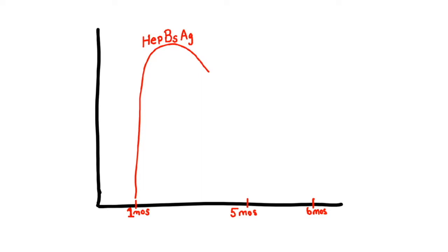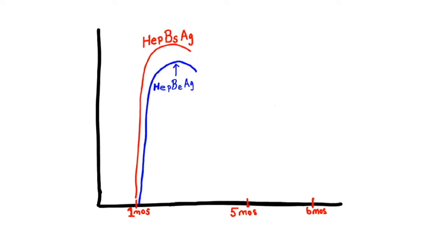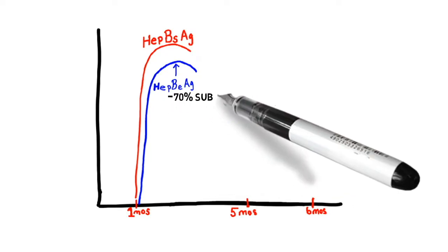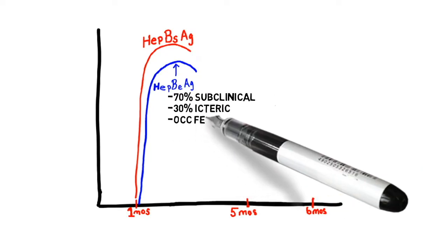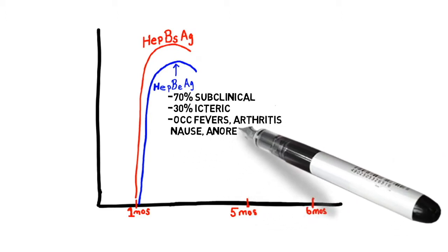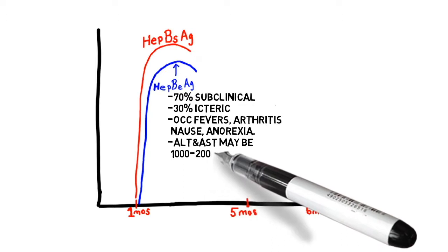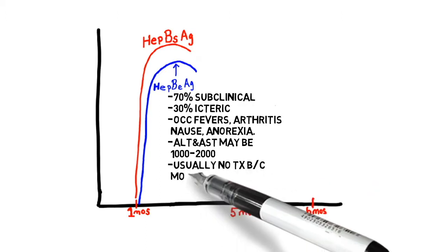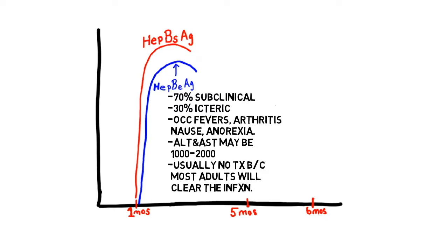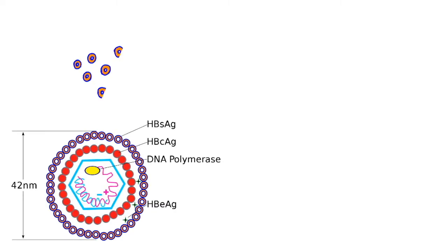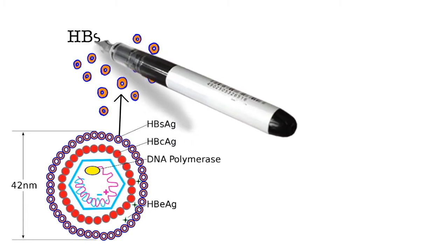During an acute infection, hepatitis B surface antigen and hepatitis B E antigen are both elevated. Fortunately, 70% of cases are subclinical; 30% will be icteric with occasional fevers, arthritis, nausea, and anorexia. The ALT and AST may be very high — 1000 to 2000. Usually no treatment is needed because most adults will clear the infection and cure it themselves.